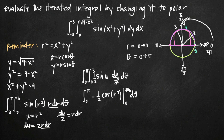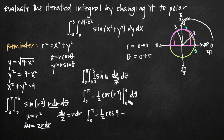Evaluating from 0 to 3: plugging in 3 gives negative one half times cosine of 9. Subtracting the value at 0 gives minus a negative one half times cosine of 0. Since cosine of 0 equals 1, that term becomes positive one half. So we have negative one half cosine of 9 plus one half, all times d theta, ready to integrate with respect to theta.